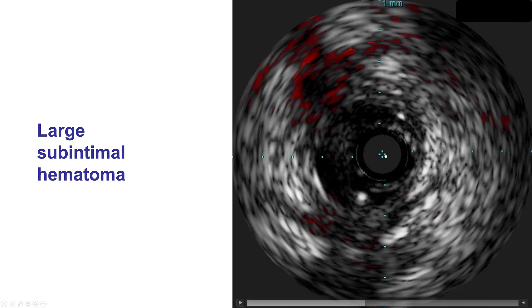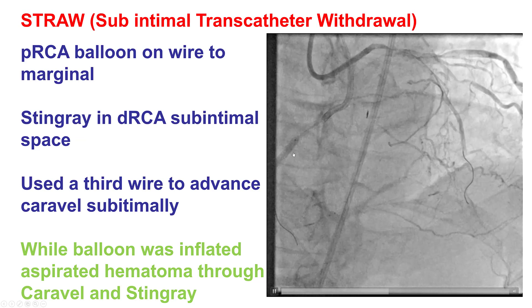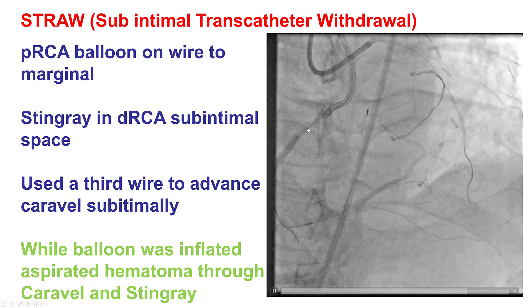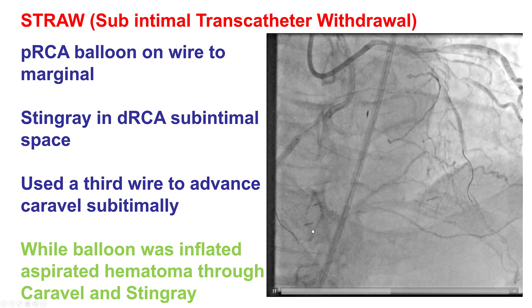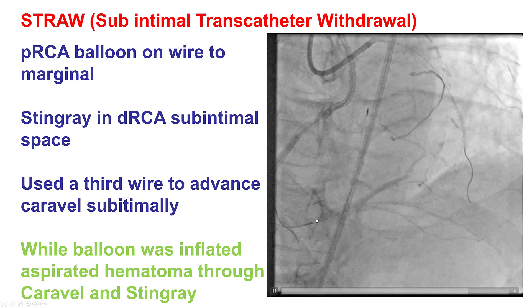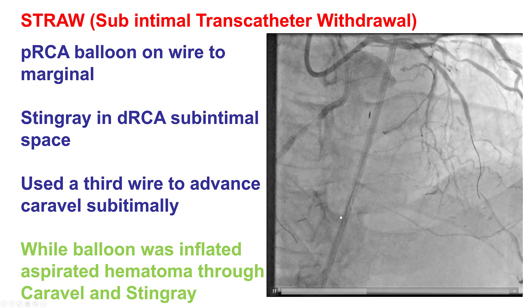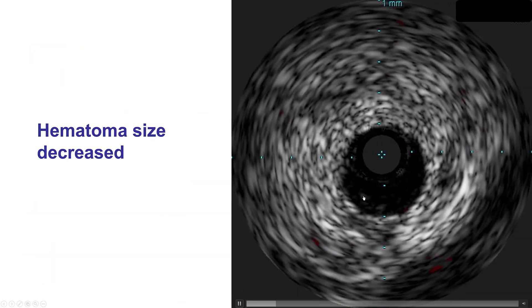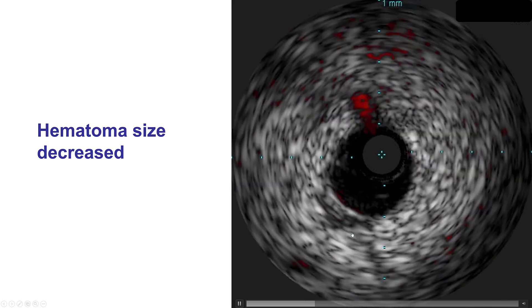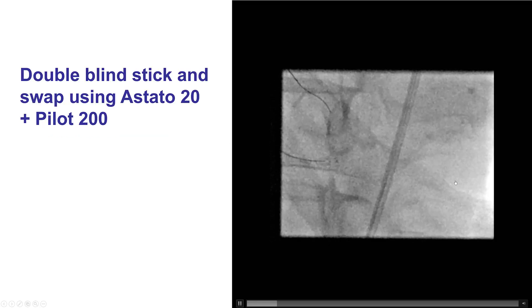This is the true lumen with the IVUS after crossing, and this is the subintimal space with the original guide wire in it. To be successful, we decided to do the full straw technique: a balloon blocking blood entry into the subintimal space, a Caraval microcatheter advanced through which we did aspiration of blood to decompress the hematoma, and then we also delivered a stingray balloon. That allowed re-expansion of the distal vessel and decrease of hematoma size, which helped with successful re-entry using the double-blind stick and swap technique.